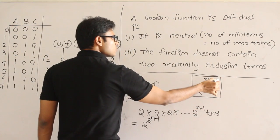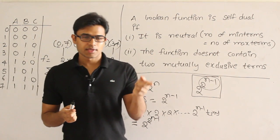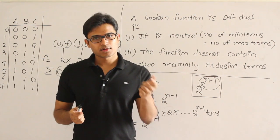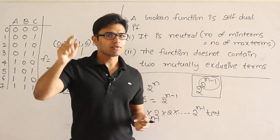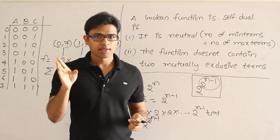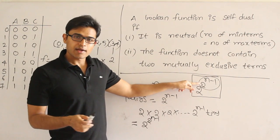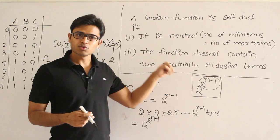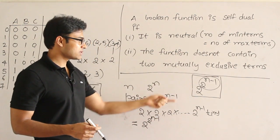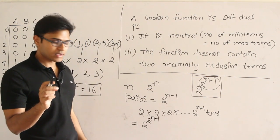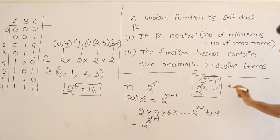After taking all the pairs, from each pair I have 2 choices to form the function. Therefore, I can write 2 × 2 × 2 and so on, 2 to the power n minus 1 times. Therefore, the total number of self-dual functions is 2 to the power (2 to the power n minus 1). This is the formula for the total number of self-dual functions possible with n variables.